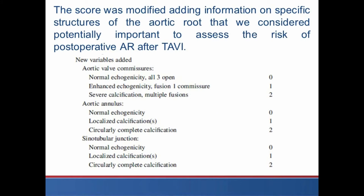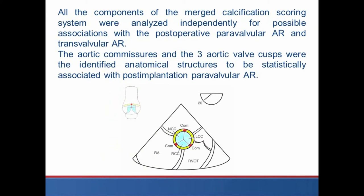We modified this score by adding information on specific structures of the aortic root, such as the aortic annulus, sinotubular junction, and aortic valve commissures, which we consider potentially important to assess the risk of post-operative aortic regurgitation after transcatheter valves. All components of the merged calcification scoring system were analyzed independently for possible association with post-operative paravalvular and transvalvular aortic regurgitation.